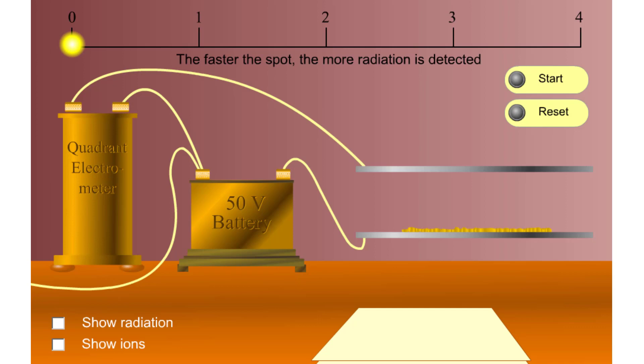In this detector, the more radiation that's detected, the faster the light moves. With no sheets present, the light goes pretty quickly.